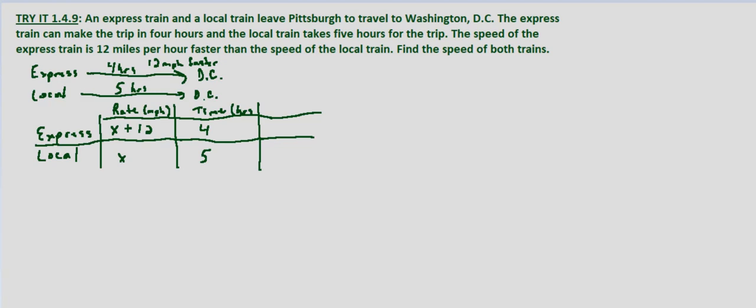And then we're using our uniform motion formula distance equals rate times time. So we simply multiply the first two columns to get our distance. Four times x plus 12. And then the rate of the local train is 5x. Now in this problem they're traveling the same distance. They're both going from Pittsburgh to Washington DC. So we know that these distances are equal.